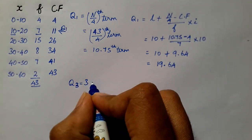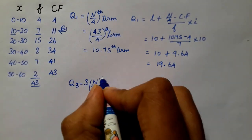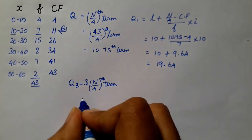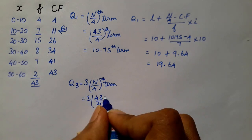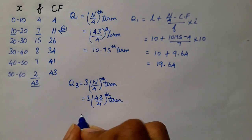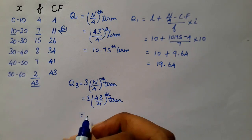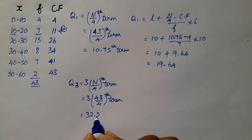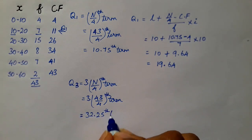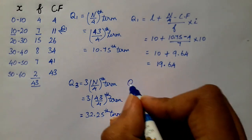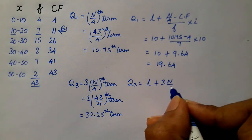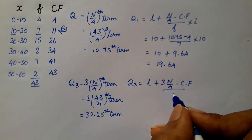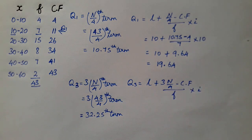For quartile 3, the formula uses 3n by 4 as the term. With n equal to 43, calculate 3 into 43 divided by 4, which gives 32.25. Using the formula l plus 3n by 4 minus cf divided by f into i, the term value is 32.25.